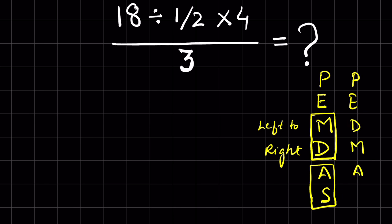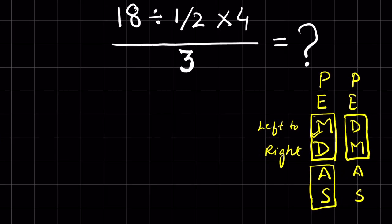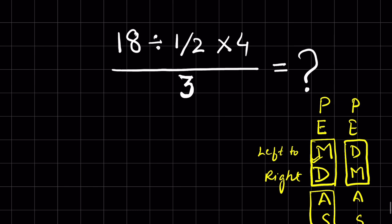But writing like this does not mean that division has any precedence over multiplication or multiplication has any precedence over division. They have equal priority and we solve them from left to right. So as per the order of operations, going from left to right, we have division first.